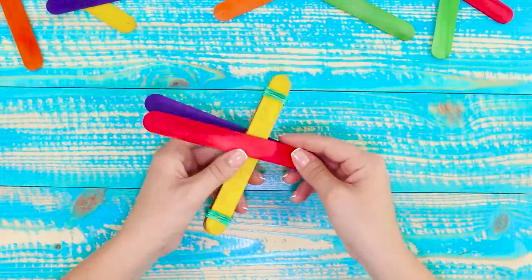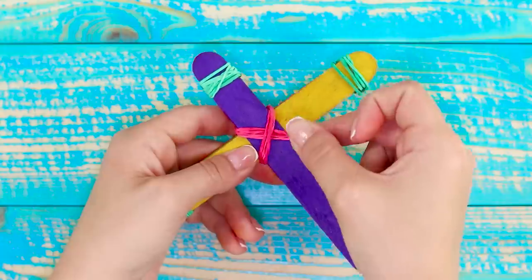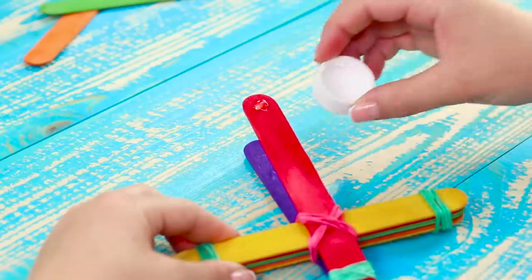Wind the edge with an elastic band. Bind the structure with a knot. Attach the lid on the edge of a clothespin using hot glue.